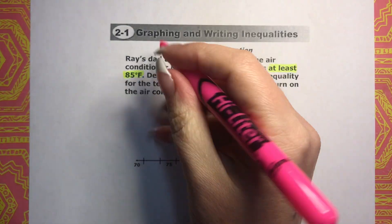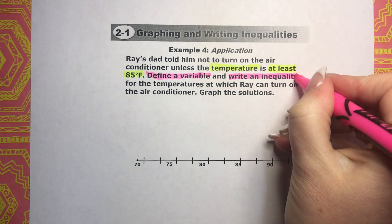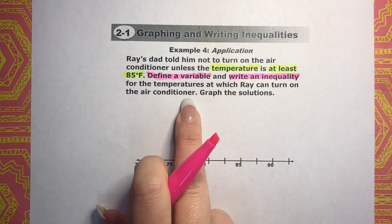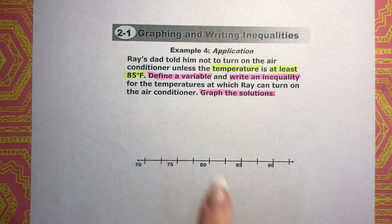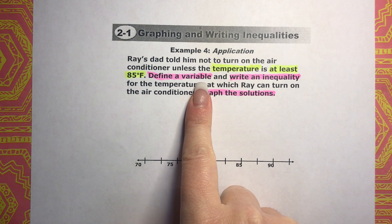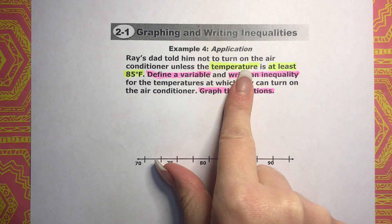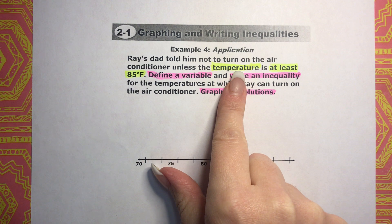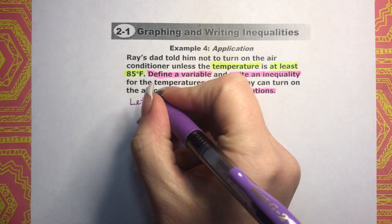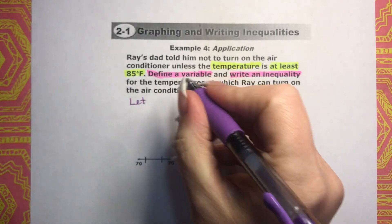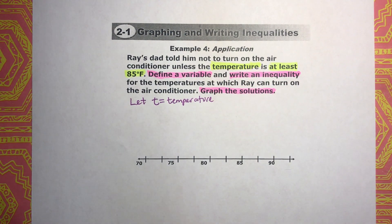The problem is asking us to do three things: define a variable, write an inequality, and graph the solution. The first thing is to define a variable — something we don't know. In this problem, the temperature is the thing that is varying; it is the variable. So I'm going to define that variable by saying: since we're talking about temperature, I'll use T. Let T equal temperature.